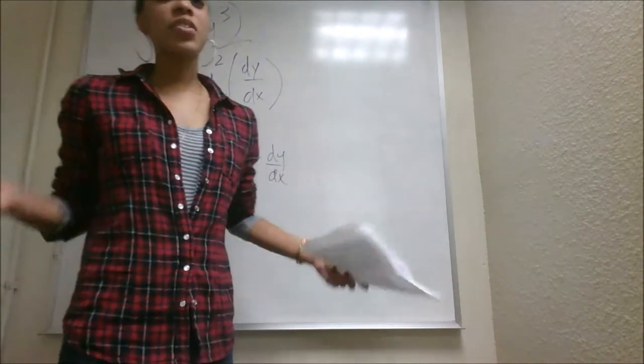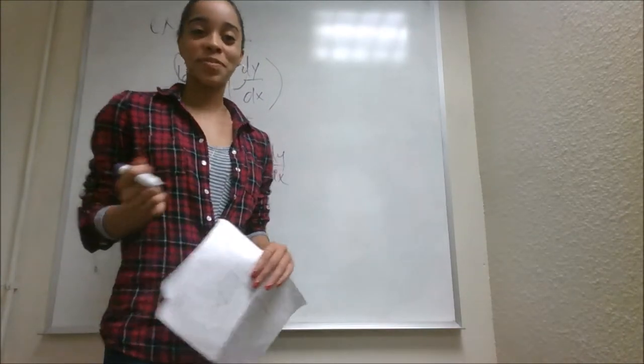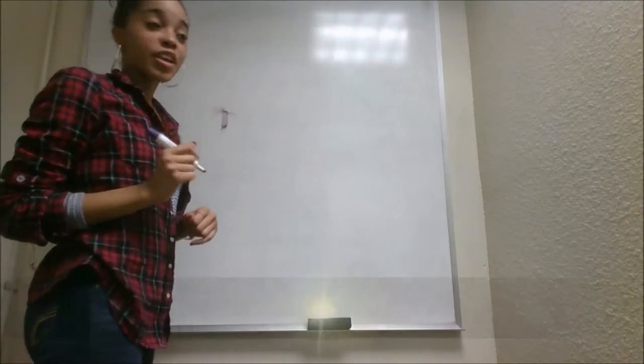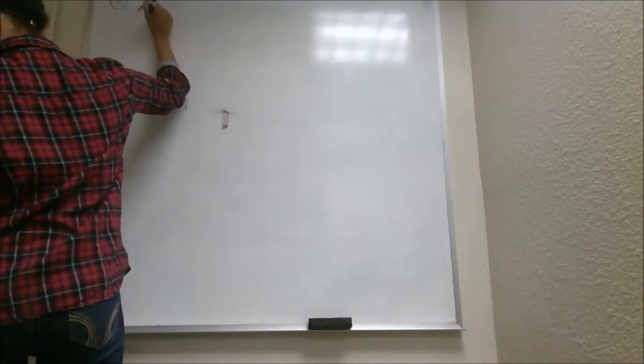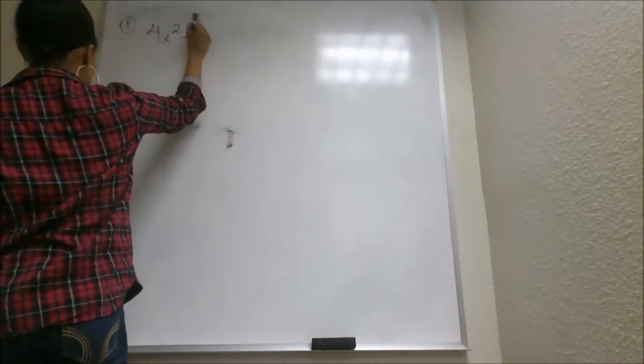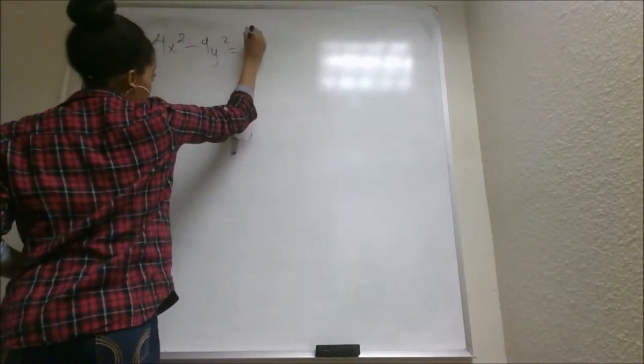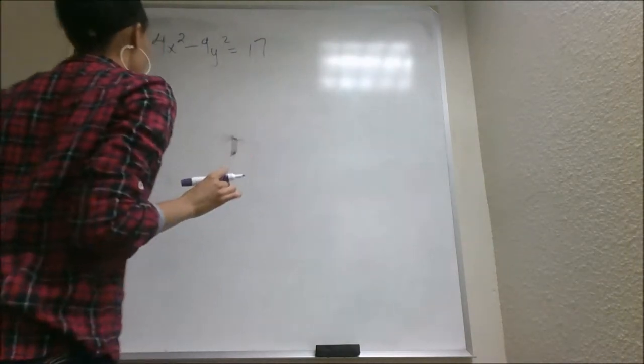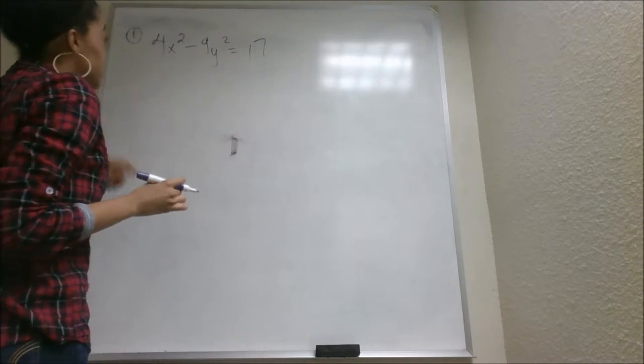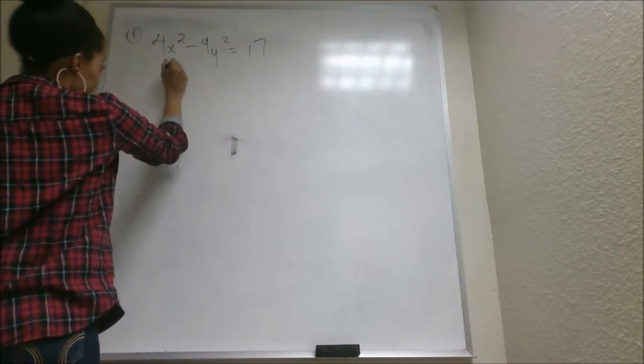Okay, so now I think you guys are ready and you have enough knowledge for us to do some of this. So now we're going to go over our first problem. 4x squared minus 9y squared equals 17. Now we're going to find the derivative of each term. So we're going to begin with 4x squared. Like we normally do, power rule, that's going to give us 8x.